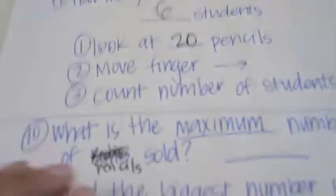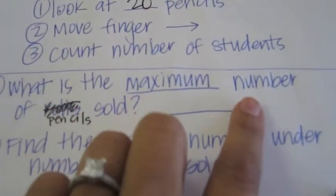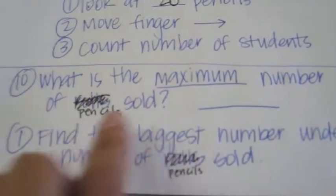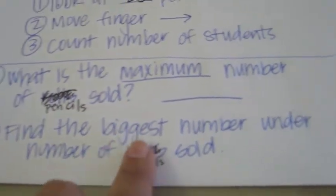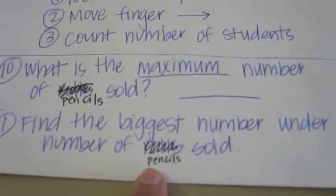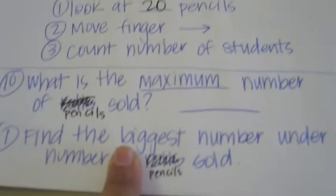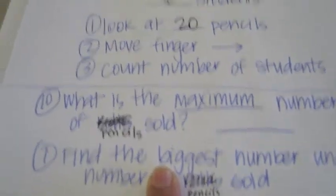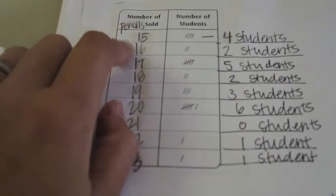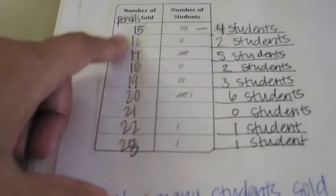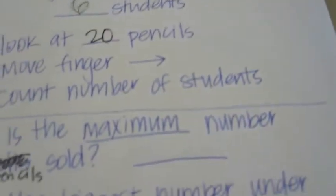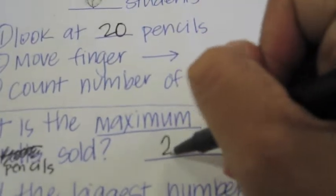Now, what is the maximum number of pencils sold? Find the biggest number under 'pencils sold.' The largest number — the maximum — is 23.